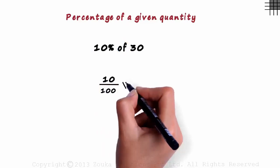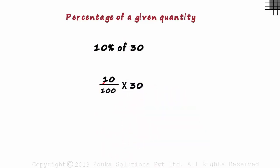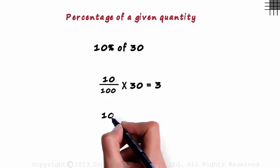Of means multiplied by. And we write 30 as is. 10 times 10 is 100. And 10 times 3 is 30. So this equals 3. So 10% of 30 is 3.